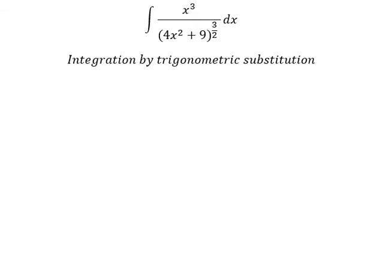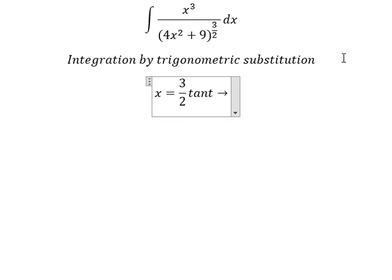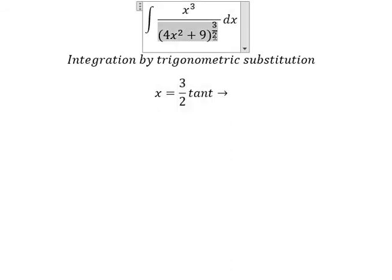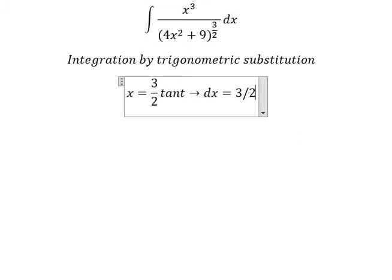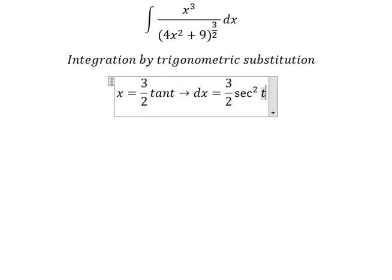I will put x equal to 3 over 2 times t. With this substitution, we get 9 over 4 times t squared. We simplify — number 4 and number 9 — and do factorization, giving tan t squared plus 1. We change that to secant of t squared, and for dx we differentiate both sides to get 3 over 2 secant of t squared dt.